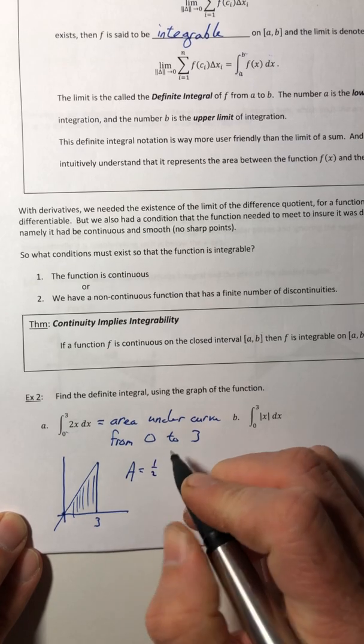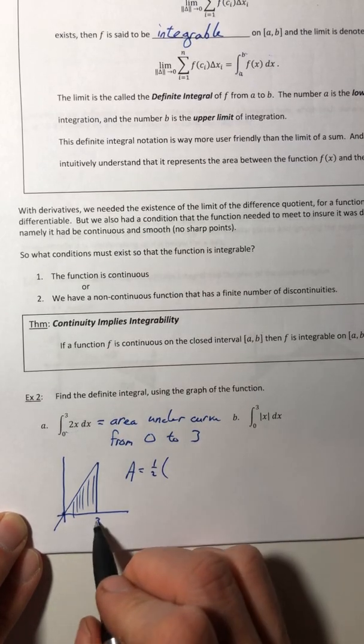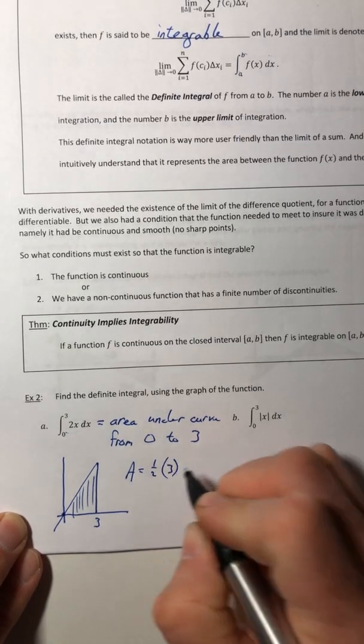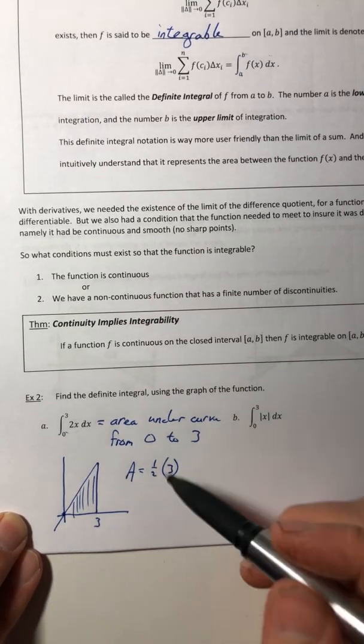So we got the area of a triangle. So one half base, which in our case is three, it's from zero to three, and then the height.